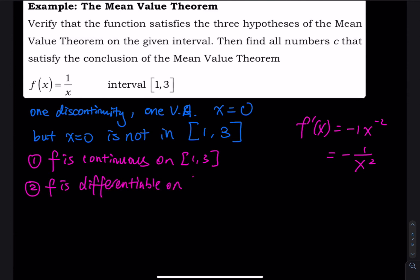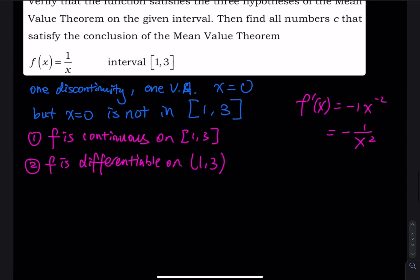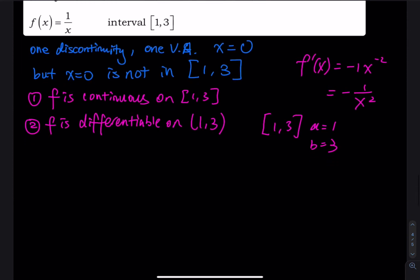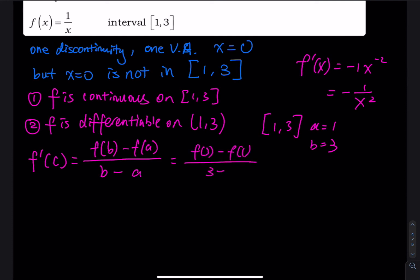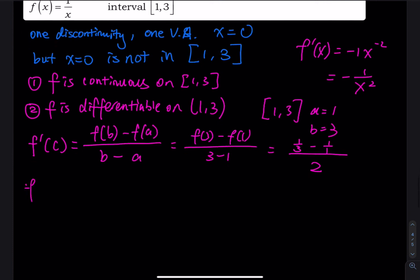Now with a = 1 and b = 3, I apply the MVT formula: f'(c) = [f(3) − f(1)] / (3 − 1). Plugging in: f(3) = 1/3 and f(1) = 1/1 = 1, so the numerator is 1/3 − 1 = −2/3, and the denominator is 2. Therefore f'(c) = (−2/3) / 2 = −1/3.